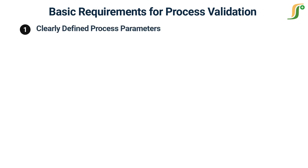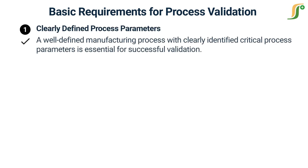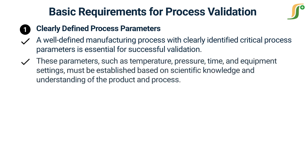Clearly defined process parameters: a well-defined manufacturing process with clearly identified critical process parameters is essential for successful validation. These parameters, such as temperature, pressure, time, and equipment settings, must be established based on scientific knowledge and understanding of the product and process.